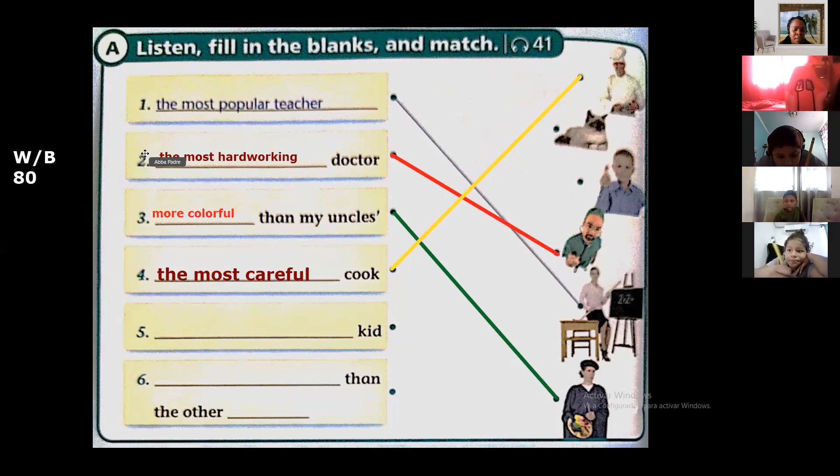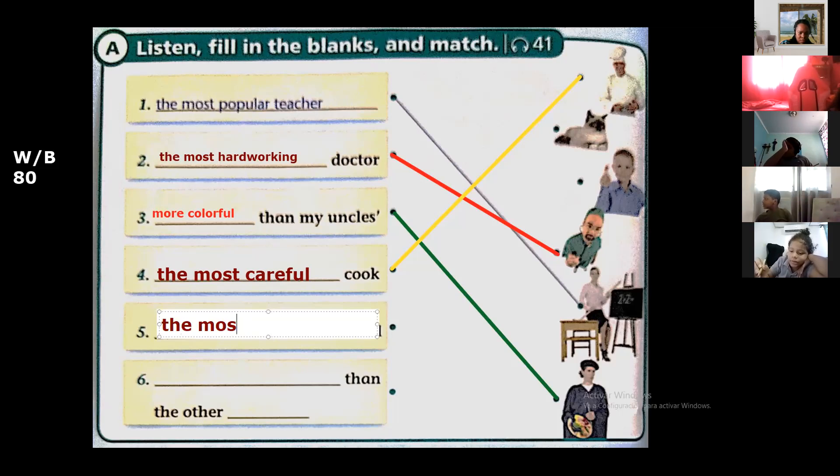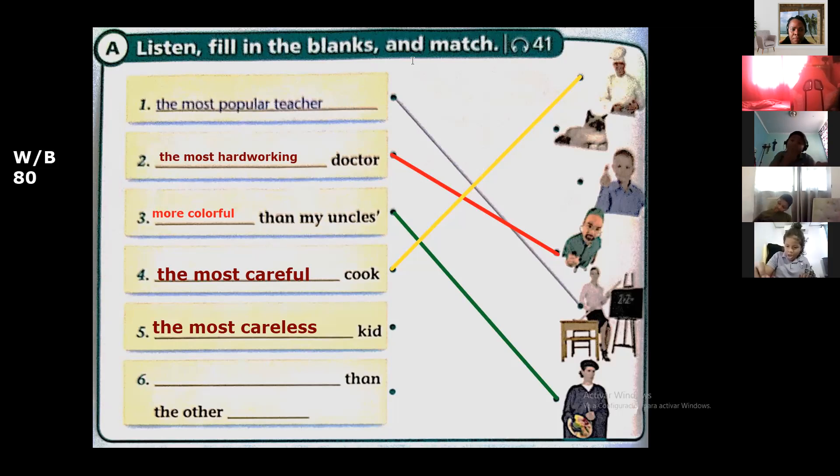And little brother is the most careless kid in the family. He often hurts himself. The most careless kid. The most careless. He says that the man is the most careless of the family because he always is lastimándose the same. Oh, it's so sad. Okay, kid.